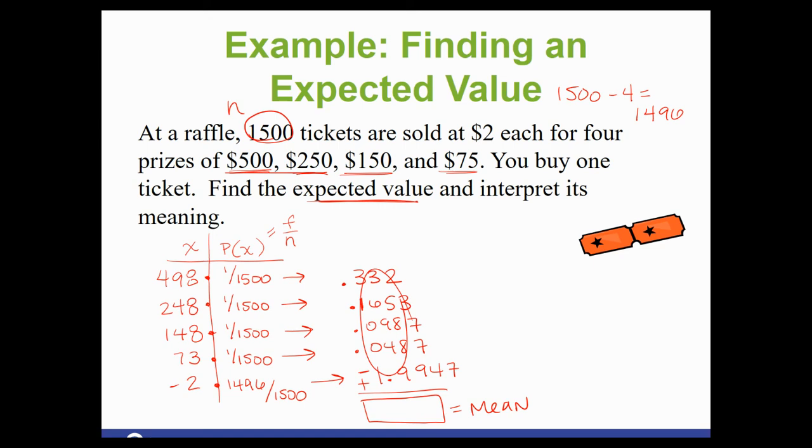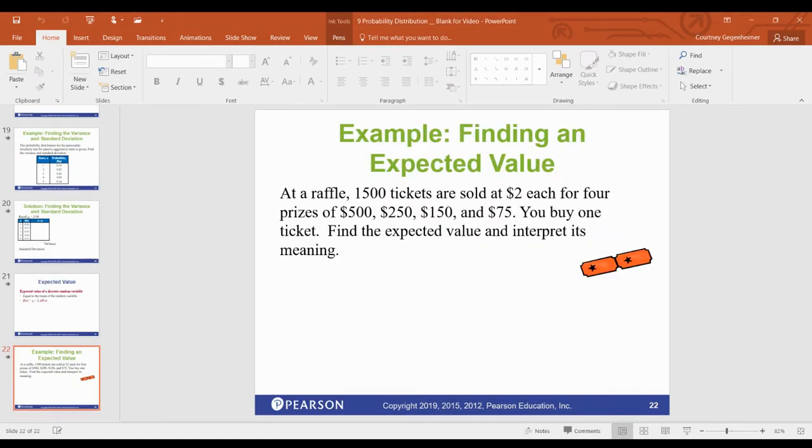And then we add them up. Again, don't forget the minus there. For that last one, we get negative 1.35. So what that means is that's in money. You're expected to walk away losing, because it's negative, $1.35 per ticket you buy.